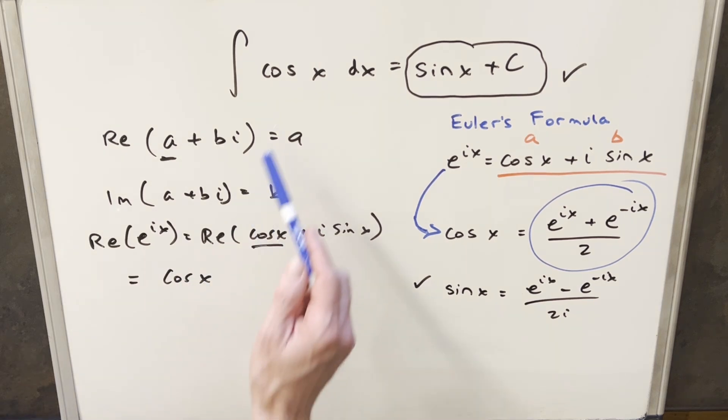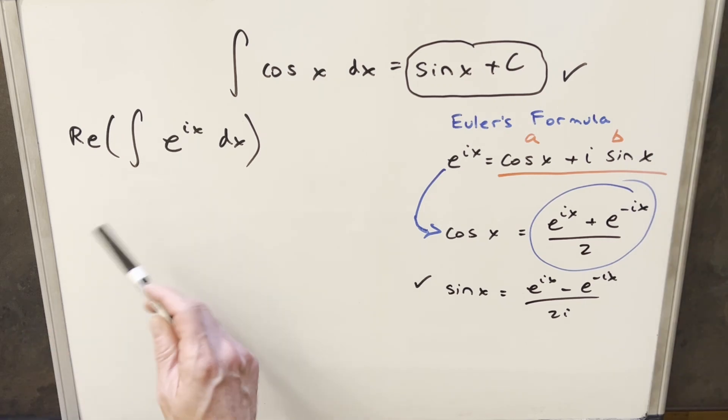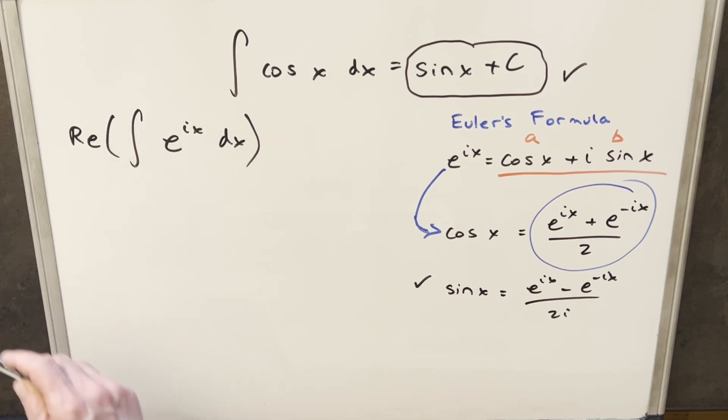But what that allows me to do is coming back to our integral, we can write cosine x as the real part of e^(ix). So now getting back to our integral, using that definition of cosine as the real part of e^(ix), but I actually can bring the real part outside of the whole integral. So now we can just integrate e^(ix).